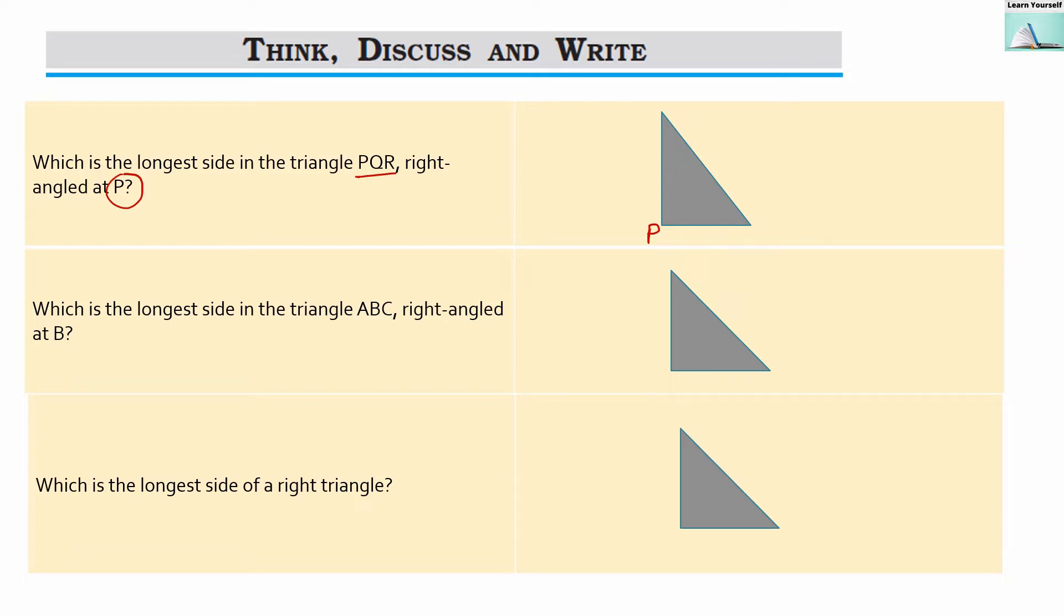Now it has to be PQR. So P, Q and R. Anticlockwise I have given the names and it is PQR. We can also give the name like PQR like this which is going to be clockwise. Only thing we have to make sure that it should be right angled at P.